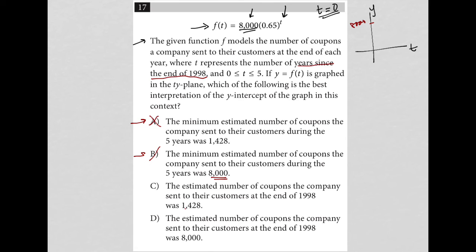Choice C has the wrong number, 1428, so that's gone. And then choice D, the estimated number of coupons the company sent to their customers at the end of 1998. Yes, because at the end of 1998, that's where t equals 0. So choice D is the best answer here.